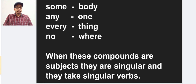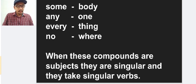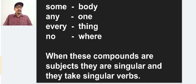The 18 indefinite pronouns are: somebody, someone, something, somewhere; anybody, anyone, anything, anywhere; everybody, everyone, everything, everywhere; nobody, no one, nothing, nowhere. When these compounds are subjects, they are singular and they take singular verbs — that is very important. They belong to the category of singular, so we have to always use singular verbs with them.